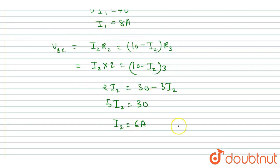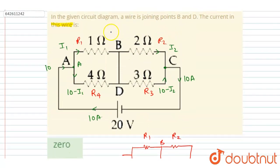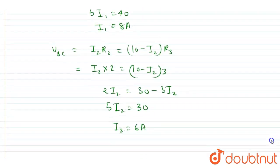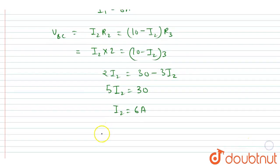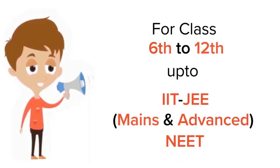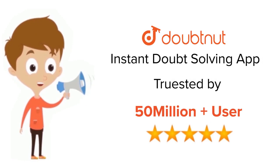We got I1 = 8 A and I2 = 6 A. Looking at point B in the diagram, current I1 is arriving and current I2 is leaving, so along the BD direction the current through the wire BD is I1 minus I2 = 8 − 6 = 2 ampere. So the current through the BD line is 2 ampere. Thank you.